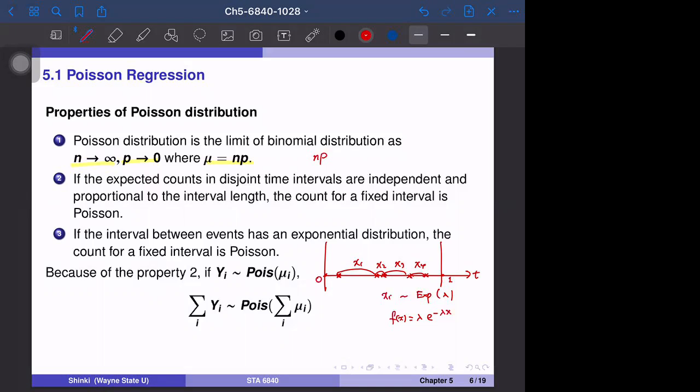Because of the property of disjoint intervals being independent, the count for fixed intervals is Poisson. This implies that the summation of Yi, when Yi are independent Poisson random variables, follows Poisson with parameter equal to the summation of mu i. This is convenient because the sum of Poisson random variables is again a Poisson random variable.